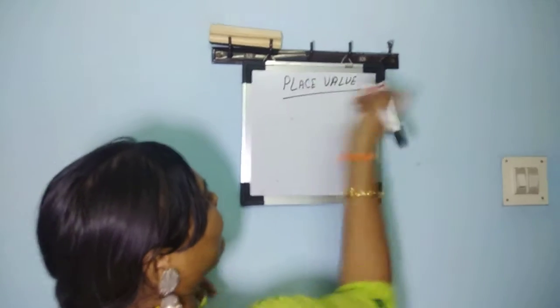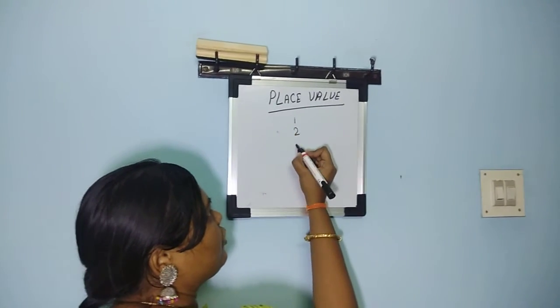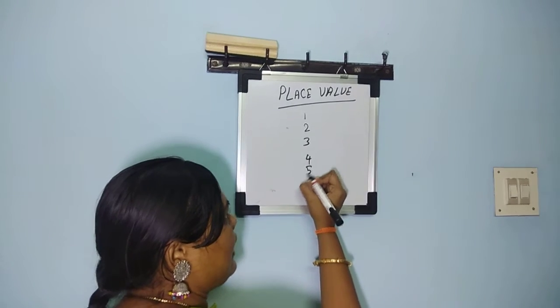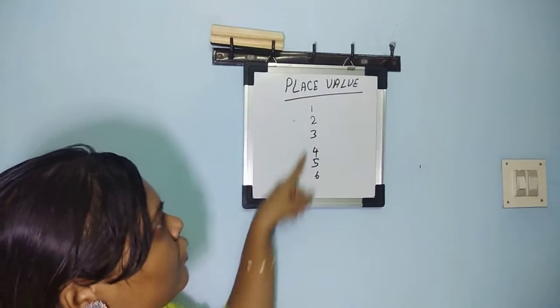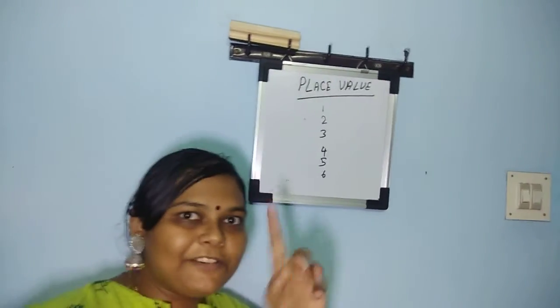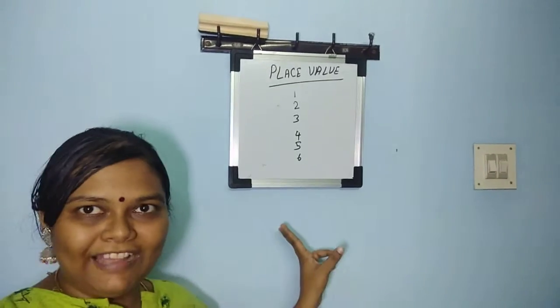So when it comes to one digit numbers: 1, 2, 3, 4, 5, 6. I will write it till 6. So it is all one digit number, it is called as ones. You can say that it is called as ones.